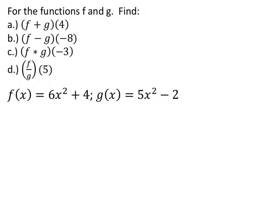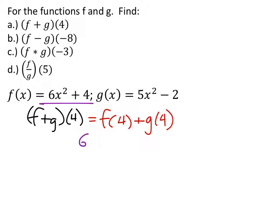So we'll start with f plus g of 4. So we saw on that last slide what these really mean, right? This is really just f of what would be x is 4 plus g of 4. And they gave us the two equations, so I'm going to start by replacing f of 4, which is this 6x squared, but I can see x is 4, right? So I've got 4 squared plus 4.